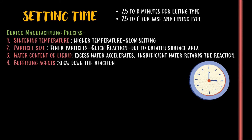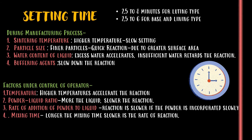The factors that affect the setting time during manufacture are: sintering temperature — higher temperature means slower setting; particle size — finer particles lead to quicker reaction due to greater surface area; water content of liquid — excess water accelerates and insufficient water retards the reaction; and buffering agents — buffering agents slow down the reaction.